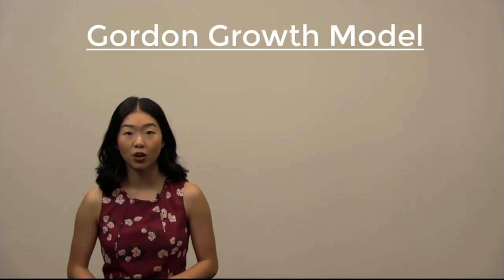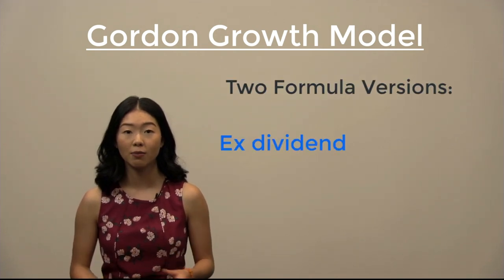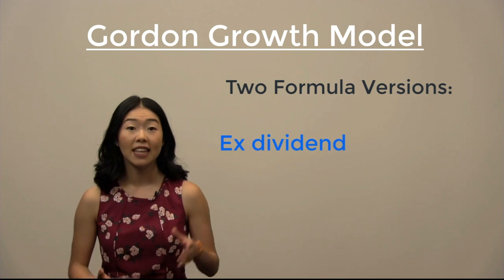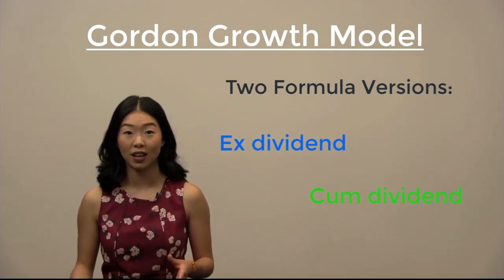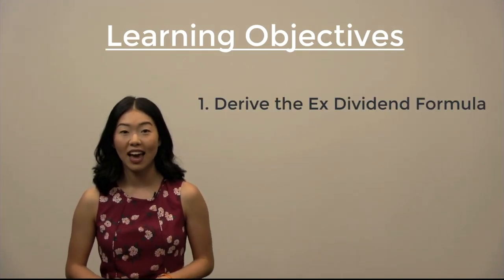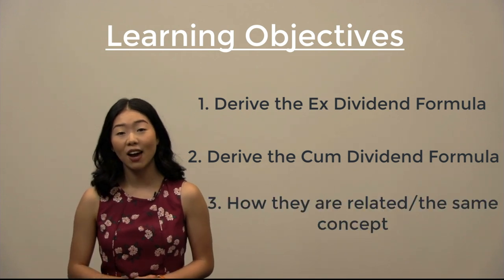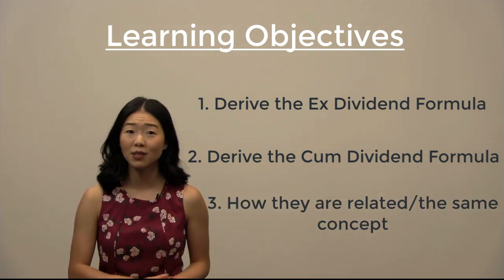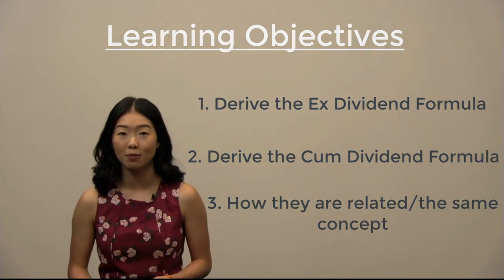Specifically regarding the Gordon growth model, there are two different versions that can be used in different scenarios: the ex-dividend formula and the cum-dividend formula. In this video, we will explore how to derive the ex-dividend formula, how to derive the cum-dividend formula, and how the two are essentially two sides of the same concept.